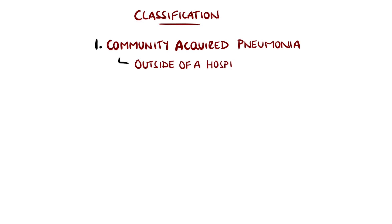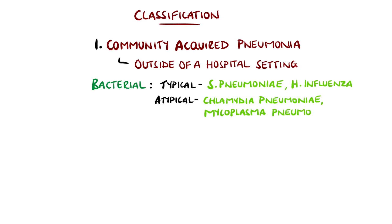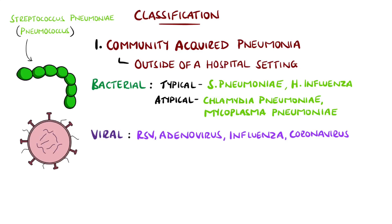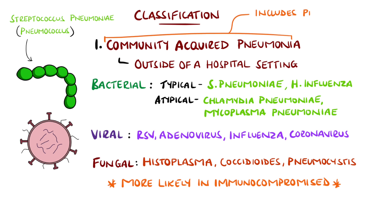Community-acquired pneumonia (CAP) is defined as pneumonia developed outside of a hospital setting. Bacterial causative agents are divided into typical and atypical — commonly Streptococcus pneumoniae (pneumococcus) and Haemophilus influenzae on the typical side, and Chlamydia pneumoniae or Mycoplasma pneumoniae on the atypical side. The most common viral agents include respiratory syncytial virus, adenovirus, influenza, and more recently coronavirus.